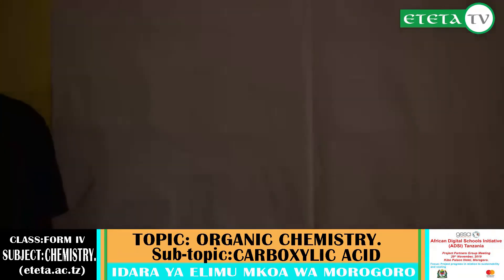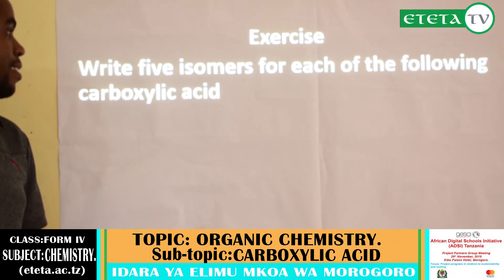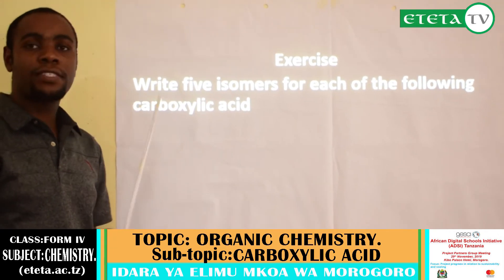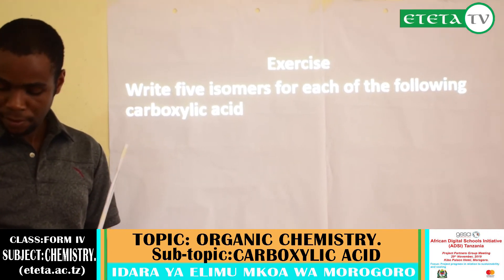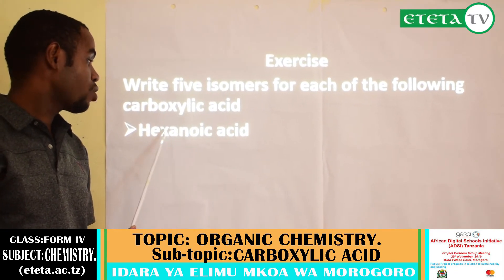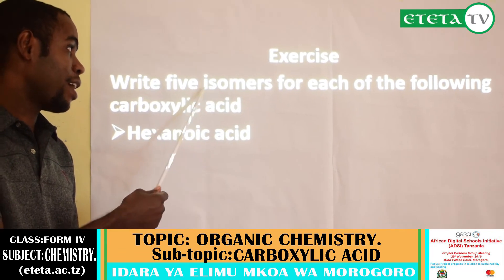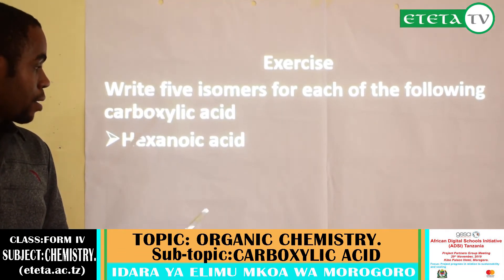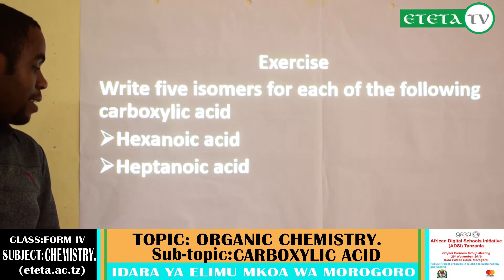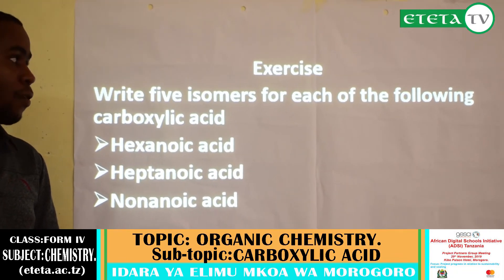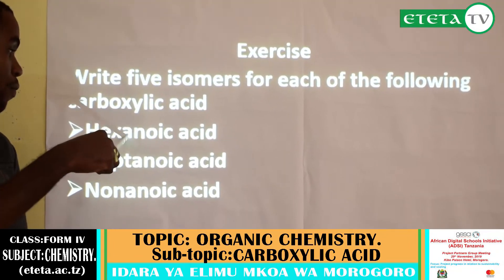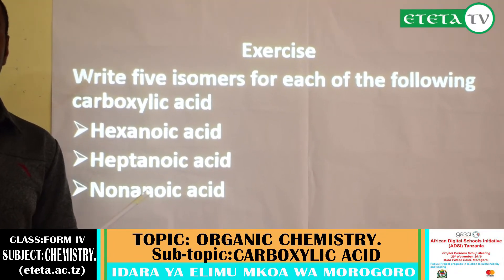Exercise: write 5 isomers for each of the following carboxylic acids — hexanoic acid, heptanoic acid, and nonanoic acid. There are many isomers of hexanoic acid, so you have to write only 5 isomers. From the examples explained earlier, it is very possible to write the isomers of these carboxylic acid compounds.